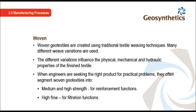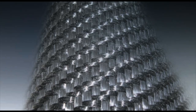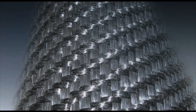Woven geotextiles are created using traditional textile weaving techniques, with many different weave variations used. The different variations influence the physical, mechanical and hydraulic properties of the finished textile. Engineers often segment woven geotextiles into medium and high strength for reinforcement functions, and high flow for filtration functions. Here is an example of a woven geotextile — you can see the individual yarns interweaving. This example has a tighter weave; it is a stronger product with a lower flow rate and is less porous.